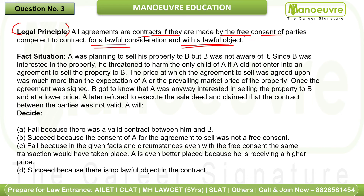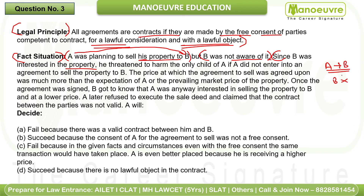Question three. Legal principle: All agreements are contracts if made by free consent of parties competent to contract, for lawful consideration and with lawful object. Factual situation: A was planning to sell his property to B, but B was not aware of it. Since B was interested in the property, he threatened to harm the only child of A if A did not enter into an agreement to sell the property.